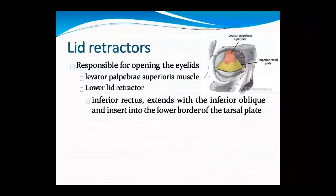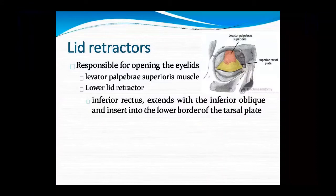Next is lid retractors. They are responsible for opening and closing your eyelid. How you open your eyes is called levator palpebrae superioris muscle — this is the upper lid retractor. The lower lid retractor is the inferior rectus, which extends with the inferior oblique and inserts into the lower border of the tarsal plate.